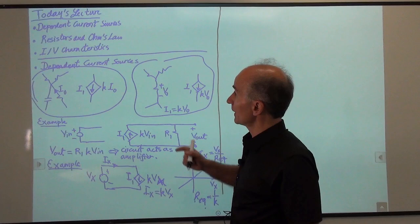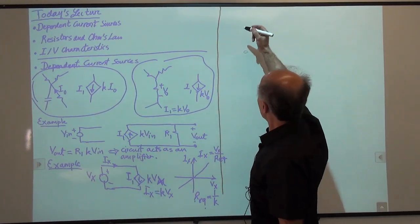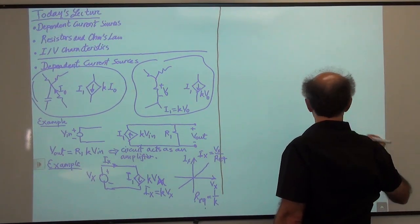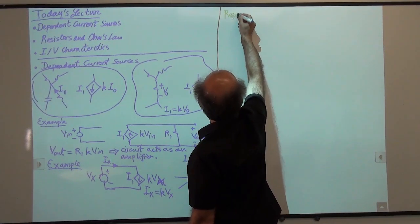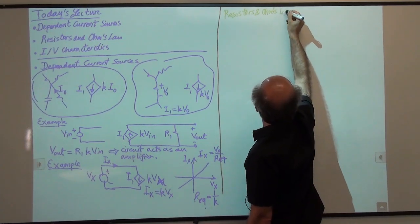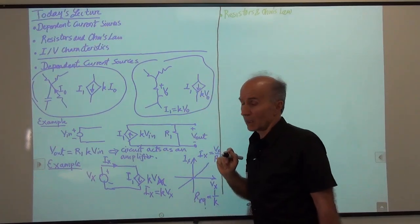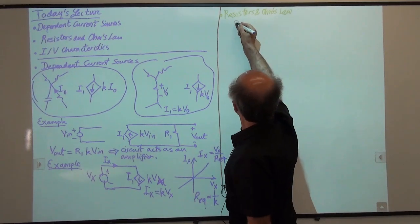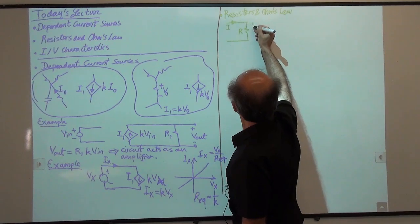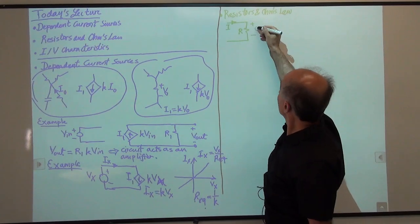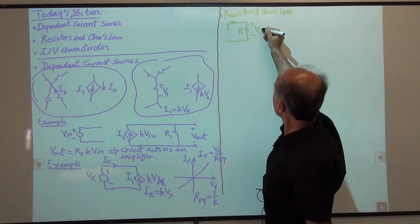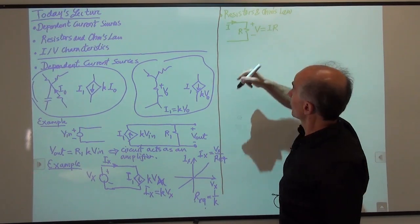Let's move on to the next component of interest: resistors and Ohm's Law. A resistor has a standard symbol. Ohm says that if a current I is flowing from one side to the other, it generates a voltage. The way to memorize this is that the current always flows from high potential to low potential, and V equals I times R. This is Ohm's Law — that's the behavior of a resistor.